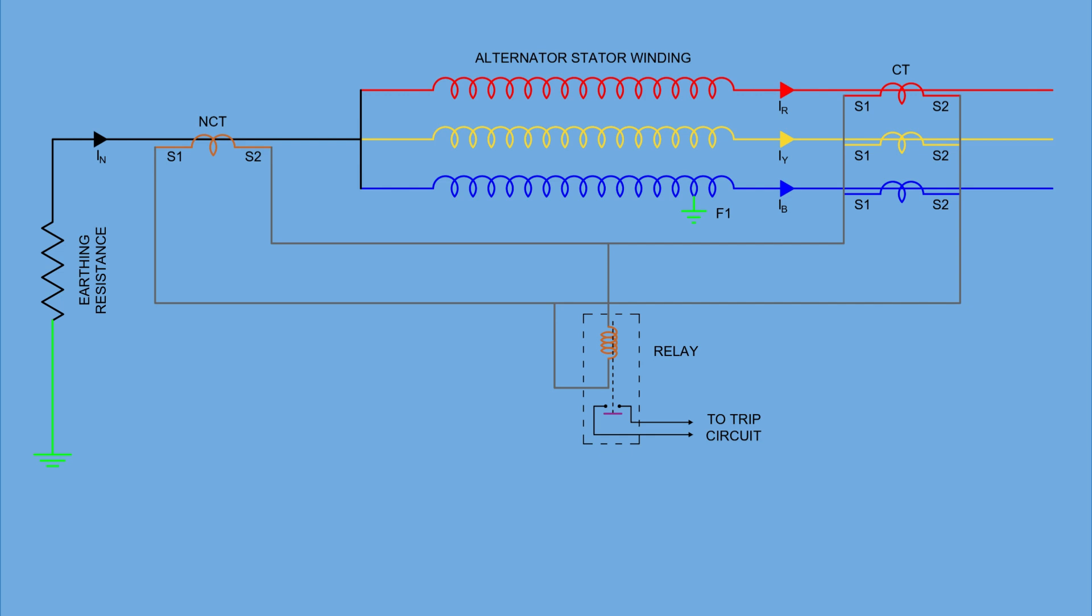What about internal faults, like at point F1? In that case, the current path is from the phase windings to earth, and returns through the earthing resistance to the neutral. So now, the sum of the phase currents no longer equals the neutral current, and a differential current appears in the secondary of the CTs. This happens because the fault current will only be sensed by the neutral CT. The line CTs will not sense the fault current. This differential current flows through the operating coil of the relay, which causes it to close its contacts and activate the trip circuit, disconnecting the alternator from the system.